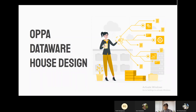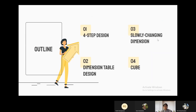Welcome to OPPAC group presentation. In this presentation, we will talk about our data warehouse design and the techniques being used. Today's presentation will be divided into four parts: the first part is four-step design, where we will talk about how we design the facts we use. The second part will be about dimension table design. The third part is slowly changing dimension, and the last part will be about the cube.